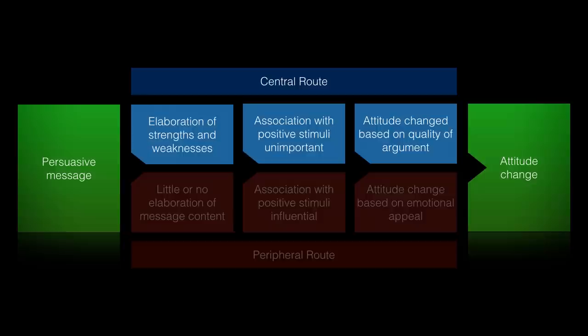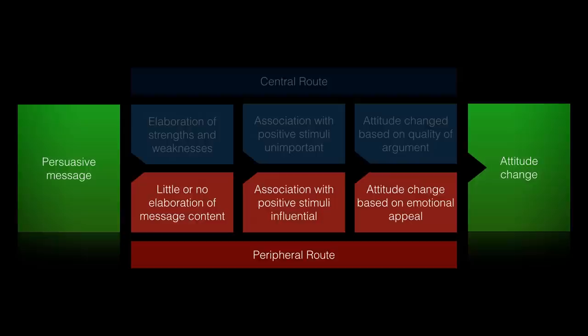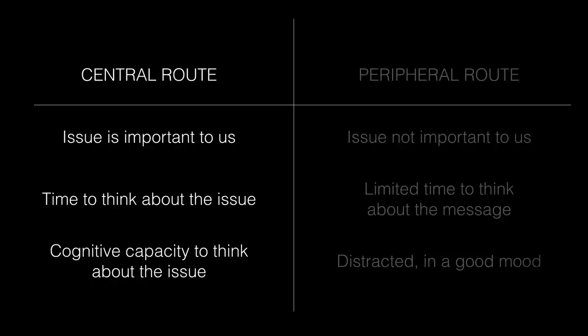Each of these routes involves different amounts of thinking. The central route involves more effortful thinking and the peripheral route involves less thinking. We refer to the amount of thinking in terms of how much you elaborate about a persuasive message. Elaboration is measured by looking at the number of positive and negative thoughts you have about a message — if you can generate a lot of pros and cons, you're showing a high degree of elaboration. For the central route, the amount of favourable elaboration influences persuasion: the more you can think of benefits compared to costs, the more you will be persuaded. For the peripheral route, the strength of the message content is less important; you're more persuaded if the message is associated with other things that are positively evaluated. For example, if you have a positive stereotype about the type of person giving you the message, you'll be more persuaded by it.